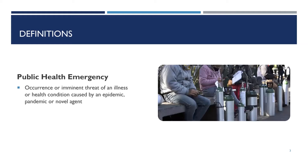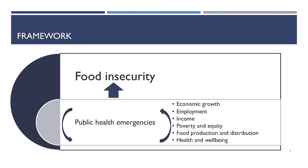A public health emergency is the occurrence or imminent threat of an illness or health condition caused by an epidemic, pandemic, or novel agent. Public health emergencies like the one we are facing today tend to affect economic growth, employment, and income of households and individuals, which leads to increasing poverty and decreasing equity. They may affect food production and distribution and altogether have health and well-being effects. One of the things this leads to is stressing out food insecurity.